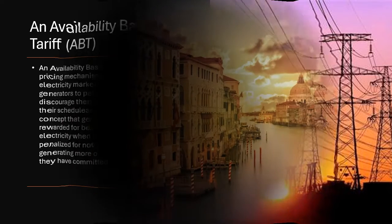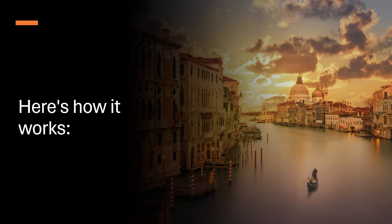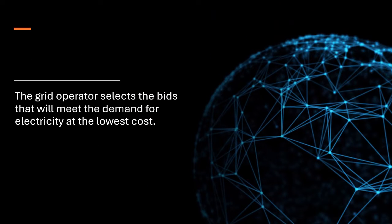Here is how it works. Generators submit bids to the grid operator specifying the price at which they are willing to sell electricity and the amount of electricity they can generate. The grid operator then selects the bids that will meet the demand for electricity at the lowest cost.